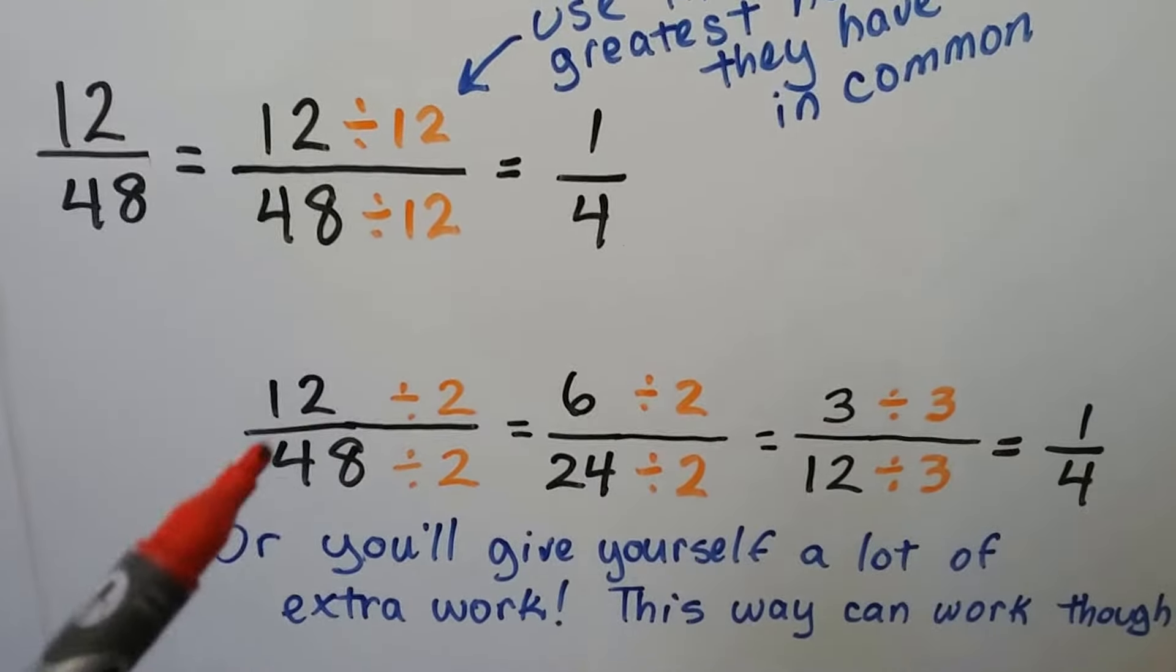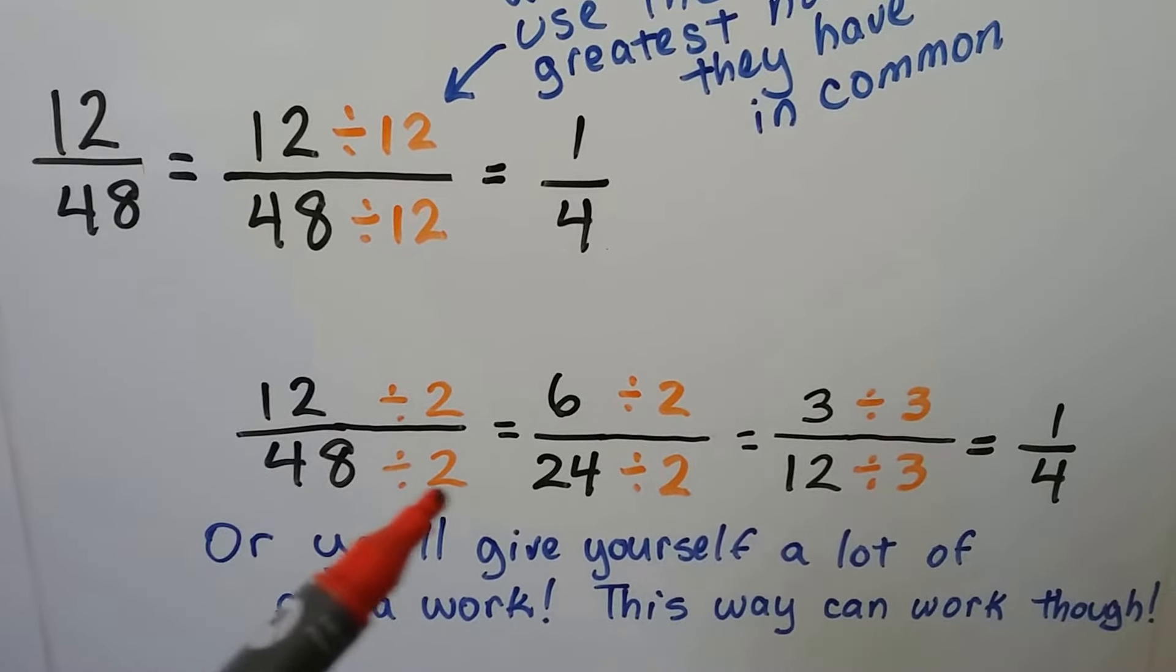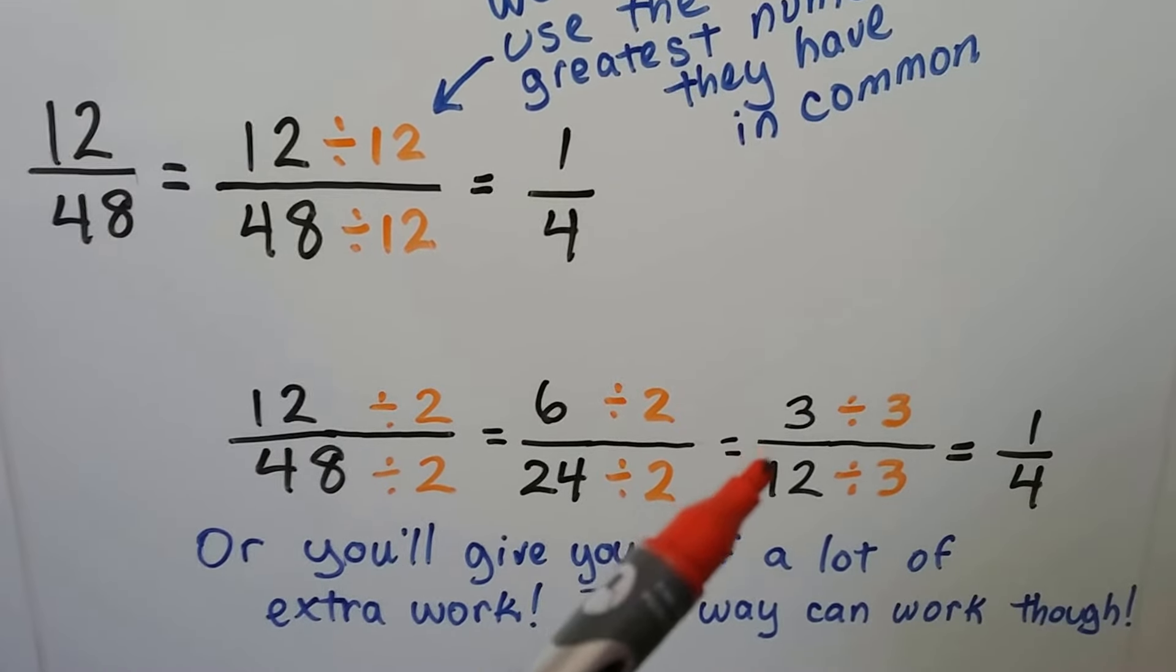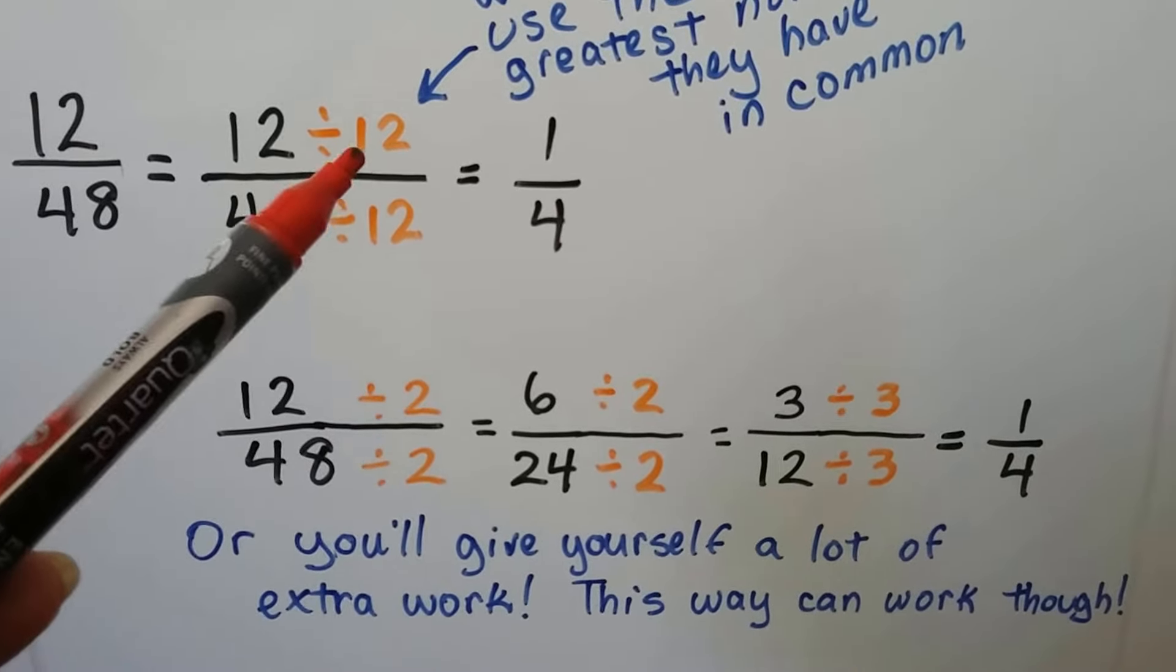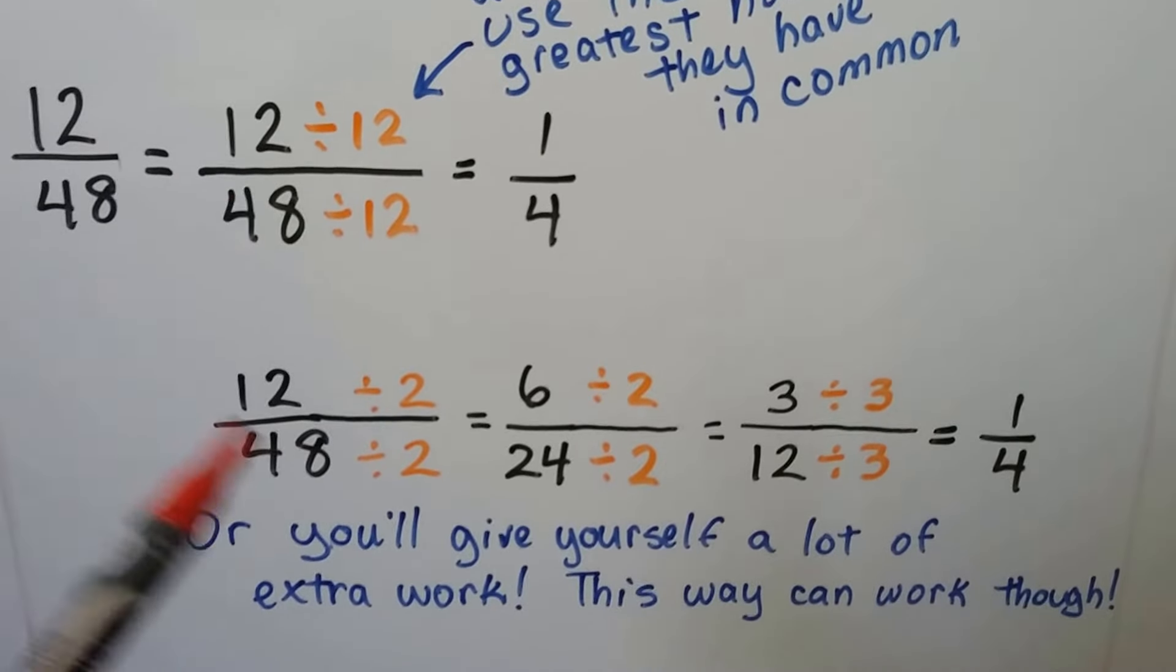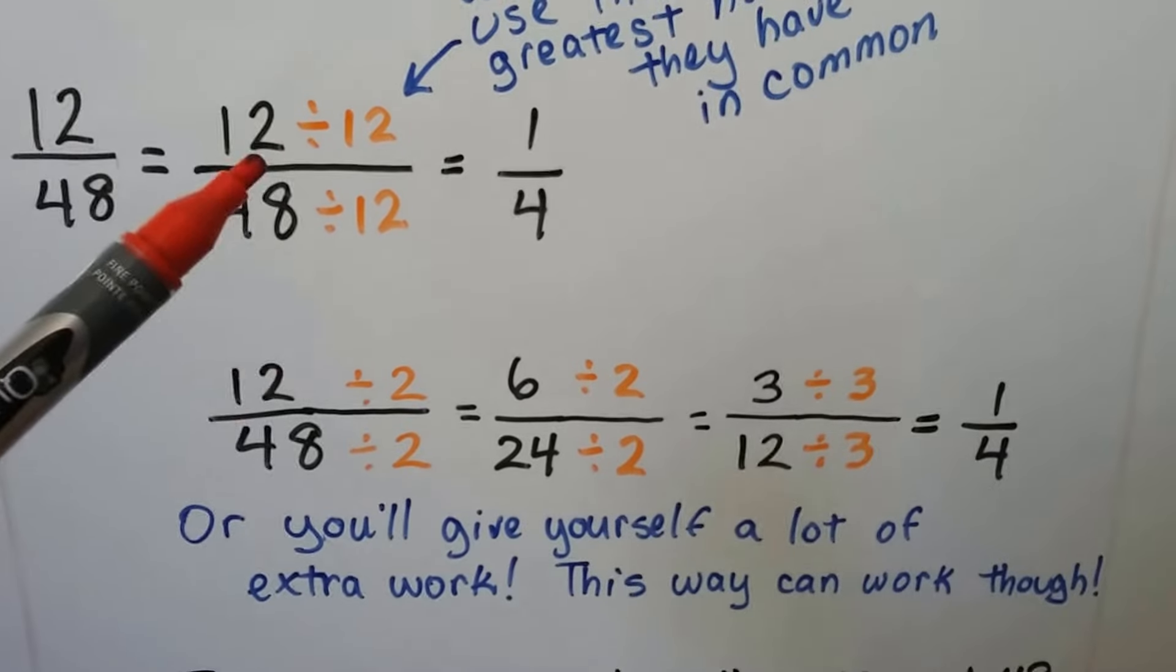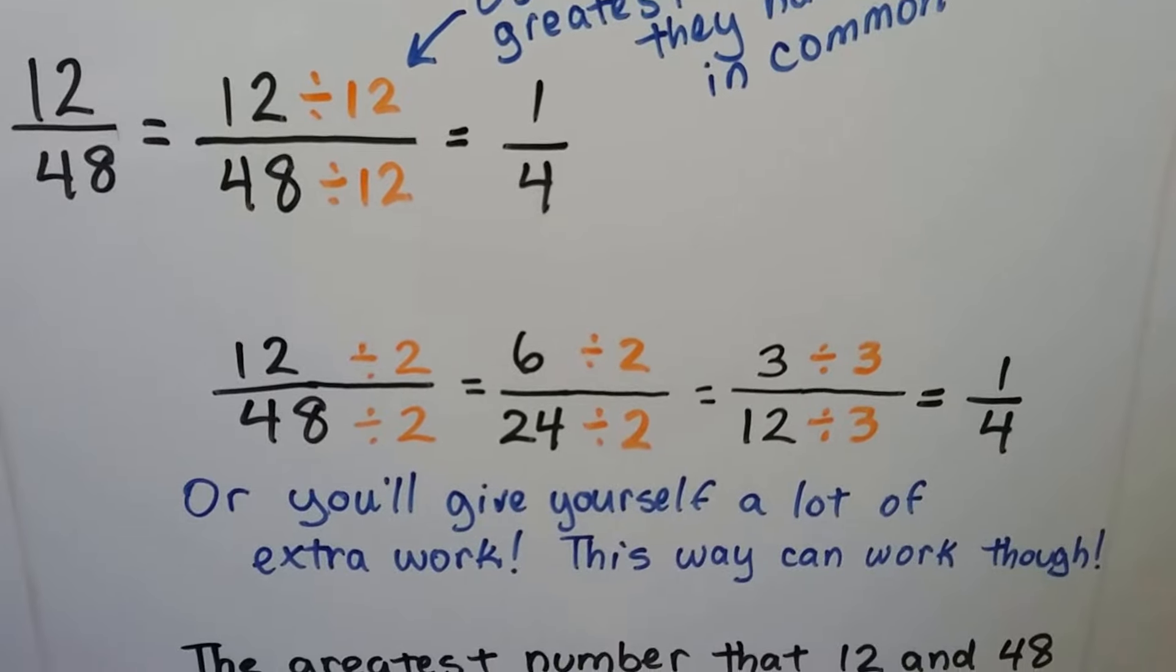Now, you could do it by little numbers. We could divide the 12 by 2 and the 48 by 2, and that's going to give us 6 24ths. Then we can divide the 6 by 2 and the 24 by 2, and that's going to give us 3 twelfths. Then we can divide the 3 by 3 and the 12 by 3 and get 1 fourth. And we're finally at the 1 fourth that we had up here when we just divided by 12. So you can give yourself a lot of extra work by using these little baby numbers. It will work. You'll get the right answer. So if you're not quite sure how to do this, you could do it this way. It will still work, but this way you'll have more time for other problems.